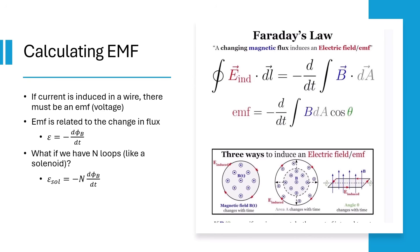If we have multiple loops, like a solenoid, multiply negative dflux dt by the number of loops to get EMF. Another way to get EMF is using Faraday's law, which states that EMF equals the integral of E dot DL.